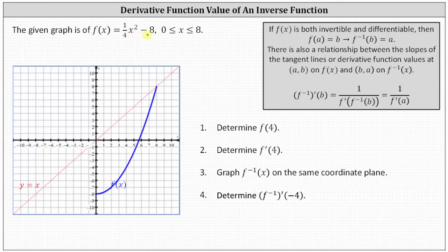Or if we take a look at this graphically, we would locate the point on the graph of f of x where x equals 4, which is this point here. Notice the ordered pair for this point is 4 comma negative 4, because the y value or output is negative 4 when x is 4. Again, we know f of 4 equals negative 4.